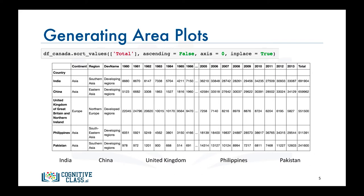So can we now go ahead and generate the area plots using the first five rows of this data frame? Not quite yet. First, we need to create a new data frame of only these five countries, and we need to exclude the total column. More importantly, to generate the area plots for these countries, we need the years to be plotted on the horizontal axis and the annual immigration to be plotted on the vertical axis.